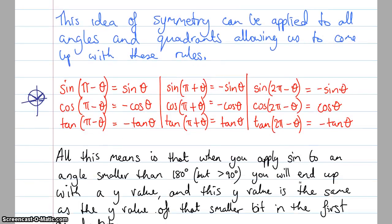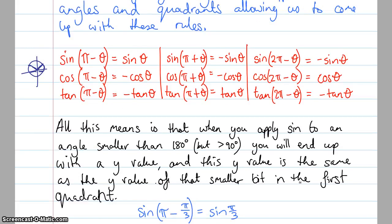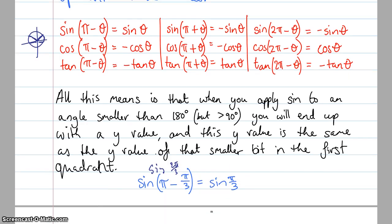All this means is that when you apply a sine to an angle smaller than 180, you end up with a y value. And this y value is the same as the y value of that similar bit in the first quadrant. So sine of pi minus pi/3, or sine of 2π/3, which is exactly the same as that, is the same as sine of π/3. So this bit will be the same there. It's just whether this is either positive or negative.